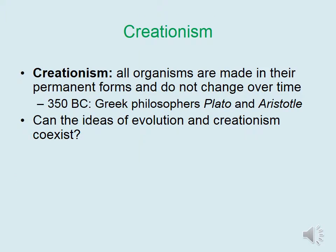The first idea we examine is creationism, which states that all organisms are made in their permanent forms and do not change over time. This is based on the book of Genesis from the Christian Bible. We consider Christianity because Darwin was from England, which was predominantly a Christian country at that time. This goes as far back as 350 BC to the Greek philosophers Plato and Aristotle, who believed in creationism. Very often individuals believe that evolution and religion cannot coexist — that one refutes the other. In the book of Genesis, different organisms are placed on earth in a certain order, and this follows the order that organisms changed according to the theory of evolution.